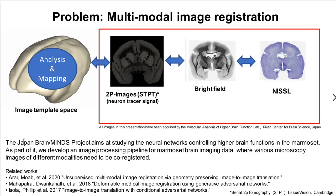We are part of the Japan Brain Minds project and as part of the project we are processing brain images of the marmoset monkey. In this presentation we will talk about three different modalities, namely two-photon microscopy images, bright-field images, and Nissl images.